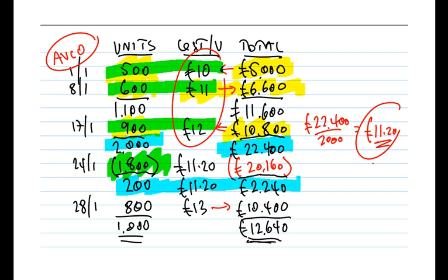The two figures under AVCO are: the value of the issue on the 24th = £20,160, and the value of closing inventory on the 31st of January = £12,640. You should notice that the AVCO issue value of £20,160 sits between the FIFO value of £20,000 and the LIFO value of £20,400. Similarly, the closing inventory of £12,640 sits between the FIFO and LIFO values — which makes sense because AVCO is a hybrid of the two.